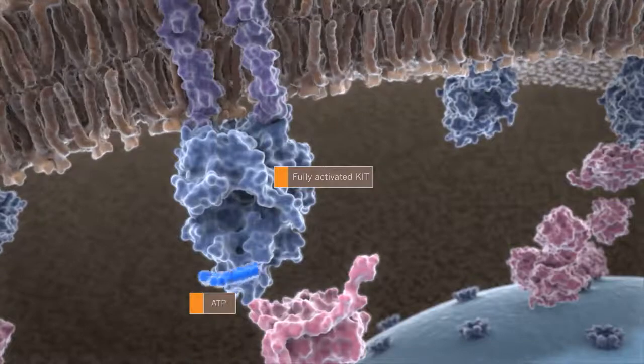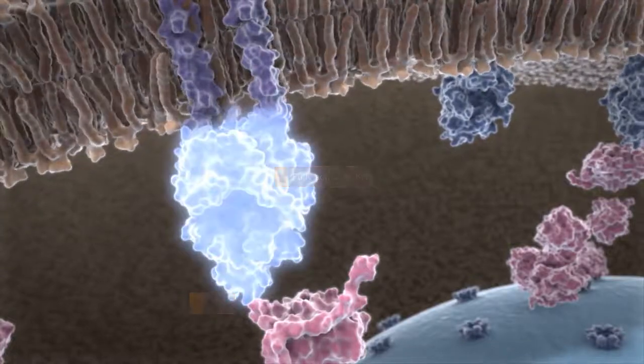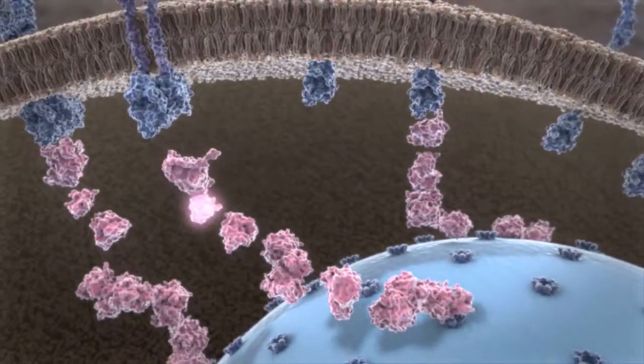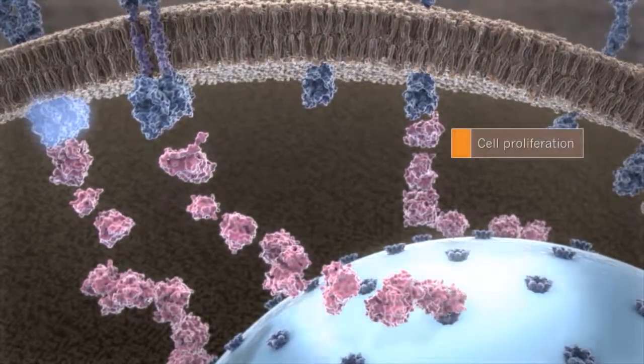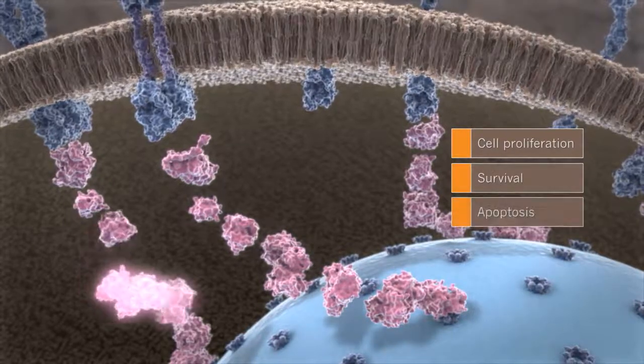The fully activated KIT receptor then directs phosphorylation and activation of targets in a number of downstream signaling pathways, which influence processes such as cell proliferation, survival, and apoptosis.